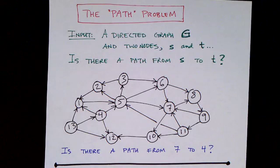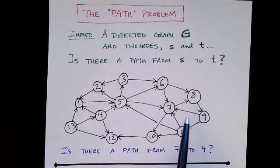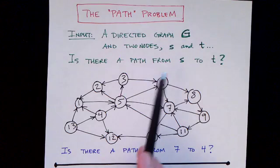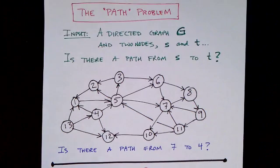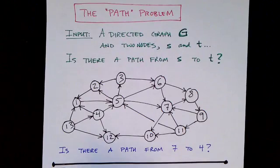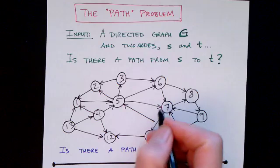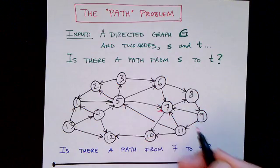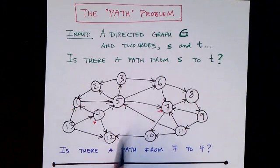An example problem that's in P is the path problem. And here's the problem: Given a directed graph, is there a path from S to T? So we're given a graph and two nodes which we'll call S and T. And the question is whether we can find a path from one to the other. For example, we might be asking whether there's a path from 7 in this graph to 4 which is here. So can we find a path from 7 in this graph to 4?